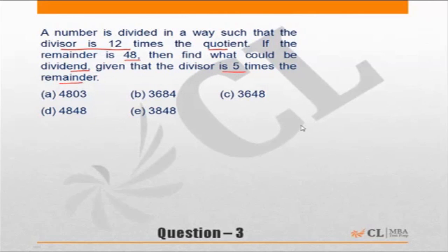I'm sure many of us are confused, so let us write it down the way we divide. The question says the remainder is 48, so the remainder is 48. Then it says find out what could be the dividend.